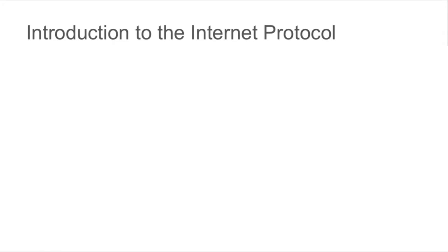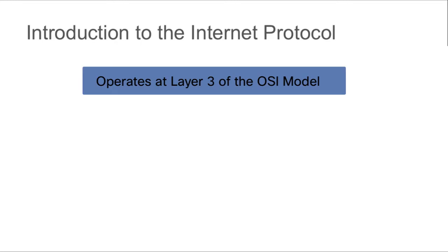The Internet Protocol is an extremely important portion of the TCP/IP protocol stack because it determines where your traffic is going to be routed, and it does this based on the destination address. The Internet Protocol operates at Layer 3 of the OSI model, and it would be considered Layer 2 of the TCP/IP protocol stack — the Internet layer.